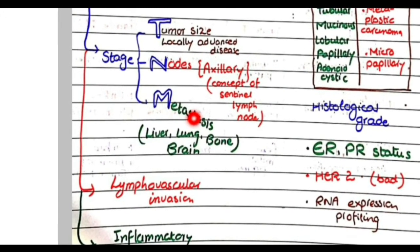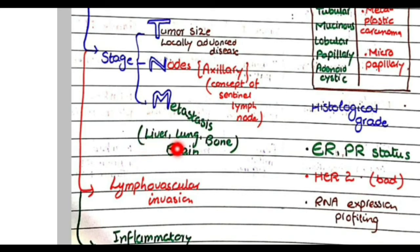Similarly, if there is metastasis to distant organs like liver, lung, bone, or brain, the prognosis will be poor.